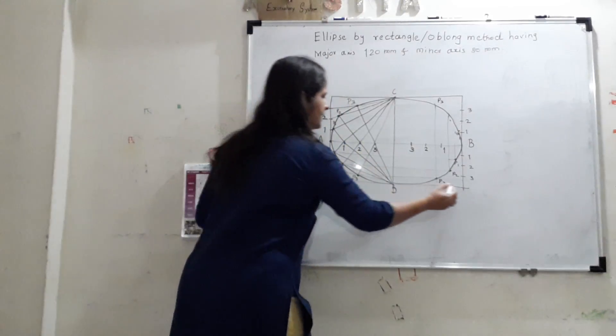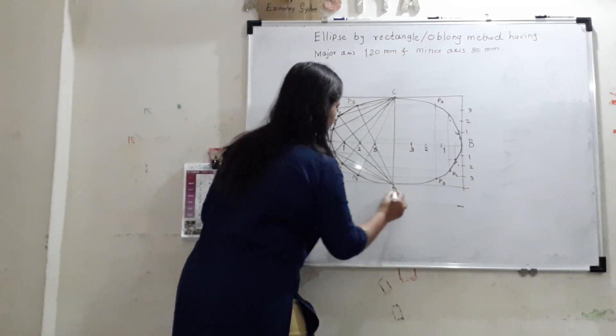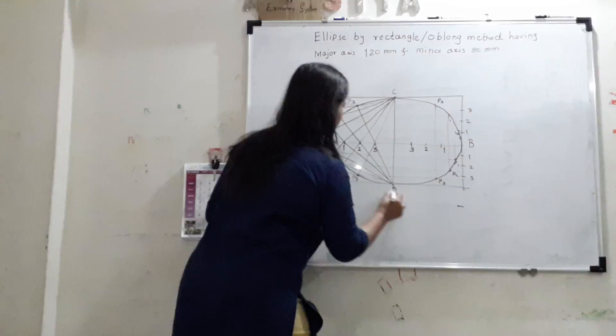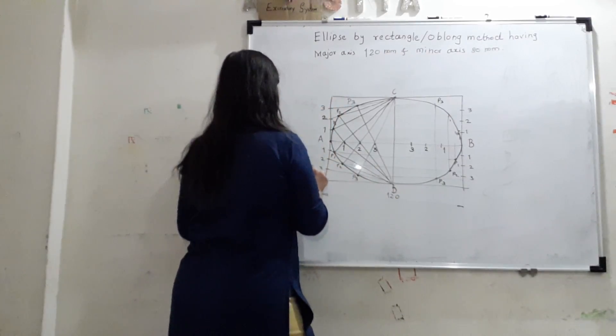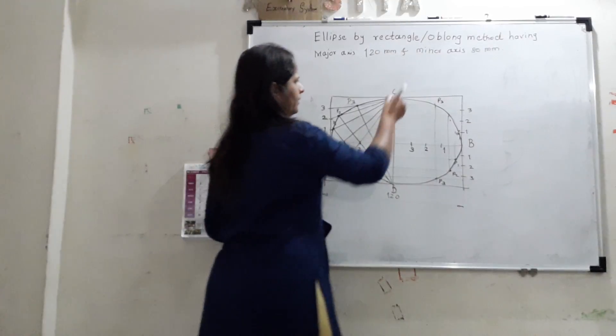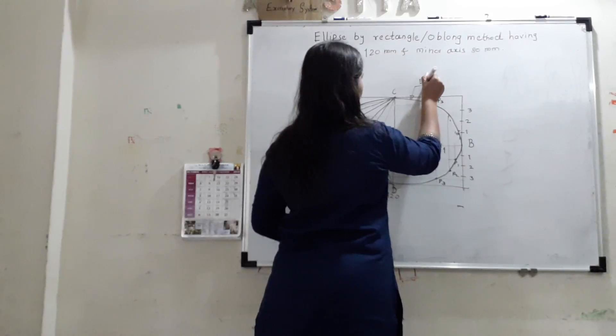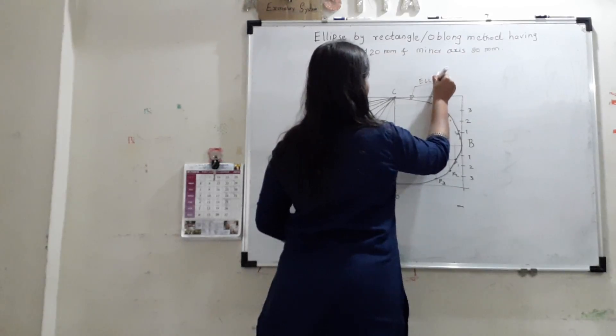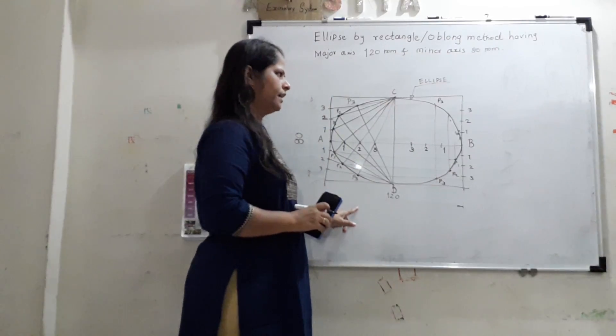Which dimensions are necessary to be given in exam? First is major axis, 120, then minor axis. These dimensions are important to be given in exam. And you have to name the curve. Although it is asked or not, but it is a good practice to name the curve in capital letter, ellipse. This is the way to draw the ellipse using rectangle method.